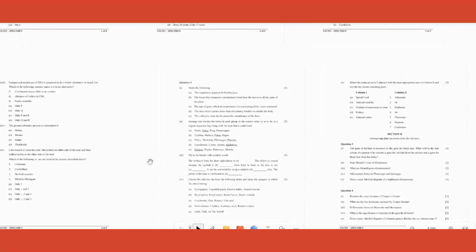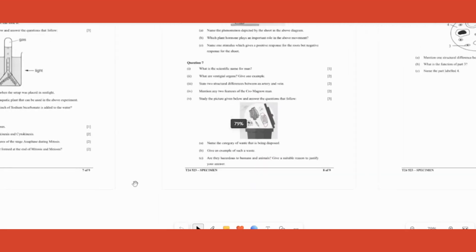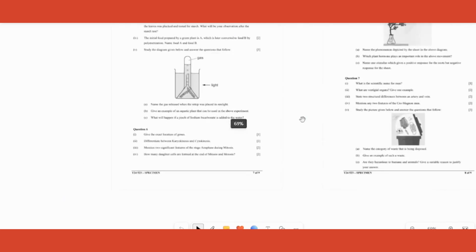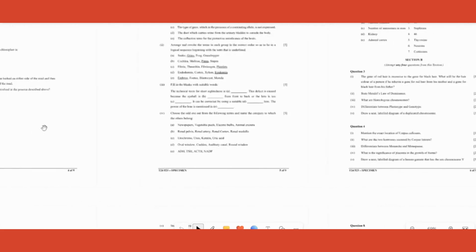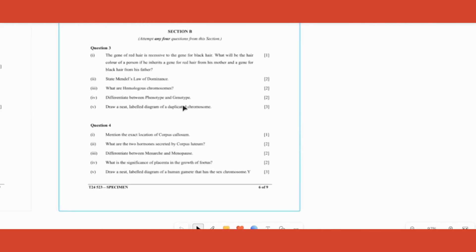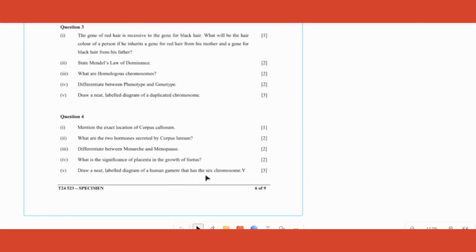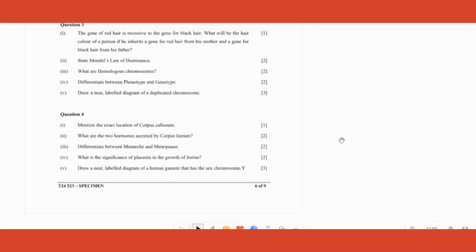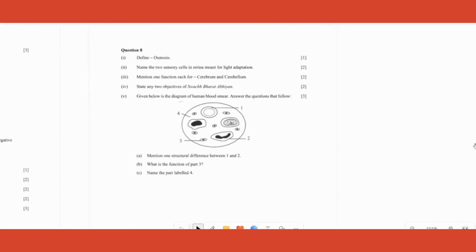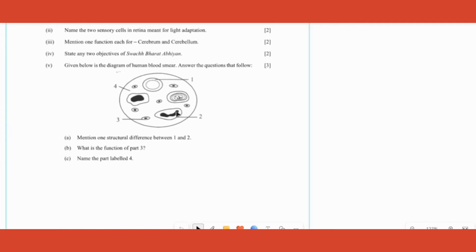Have a look at Question 3: draw neat labeled diagram of duplicated chromosome, three marks - direct question. Question 4 is again draw neat labeled diagram of human gamete that has sex chromosome Y. So what is that you're supposed to draw and so on - that's a direct question. But it may not always be this. Three marker diagram question may not always be draw. Instead, a diagram is already given to you and some questions are asked. Such questions can also come - those are called diagram based questions.